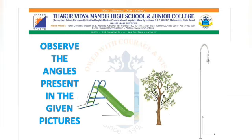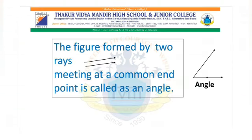Hey kids, can you notice that slide? We will see the angles between the ground and the slide. If you see properly, the ladder makes an angle with the ground. Here is a picture of a tree — we see angles between the tree trunk and its branches. Now this is an electric pole; there is an angle between the electric pole and the ground. So, what is an angle? The figure formed by two rays meeting at a common end point is called an angle.